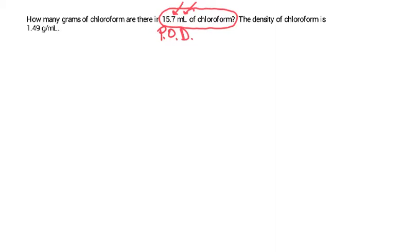The density of chloroform is 1.49 grams per milliliter. Whenever you have two different units that are set to be equal to each other, or you have that per in there, that's a signal to you that it is a conversion factor.